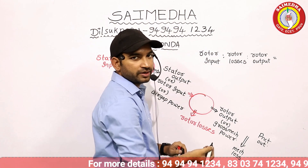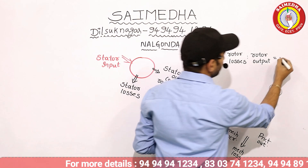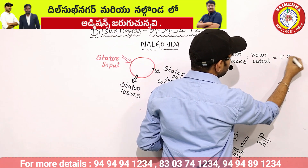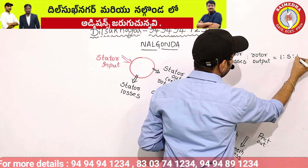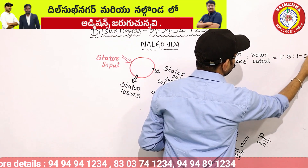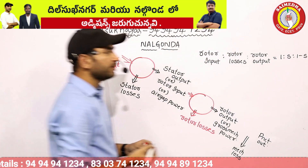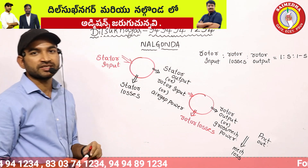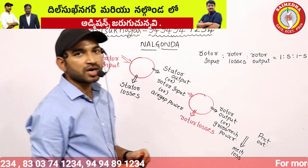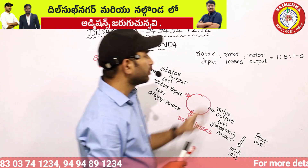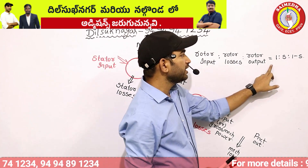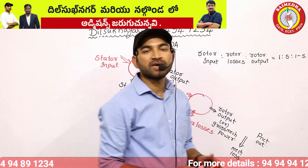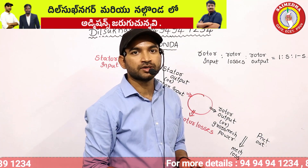The rotor input power to rotor losses to rotor output power is equal to 1 : s : (1 − s), where s is the slip.